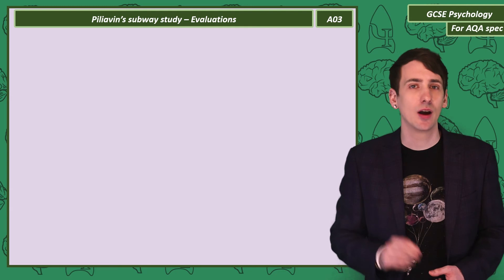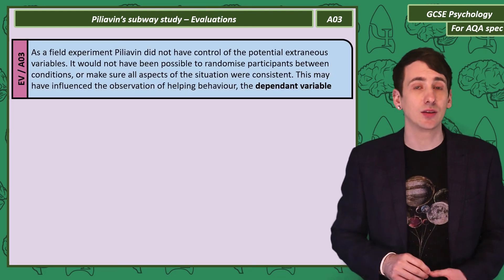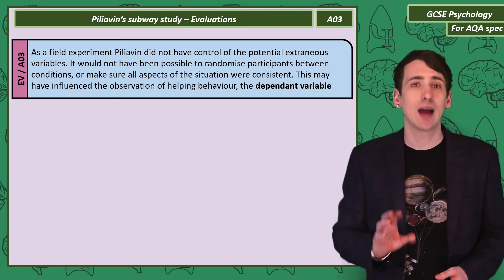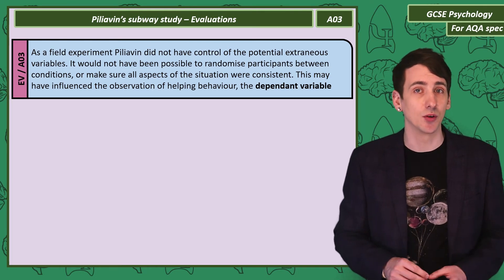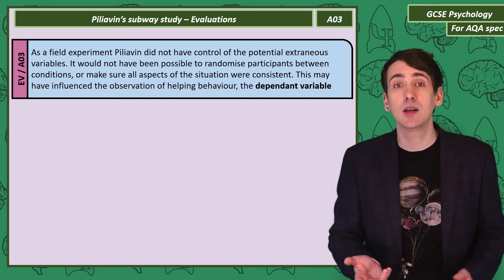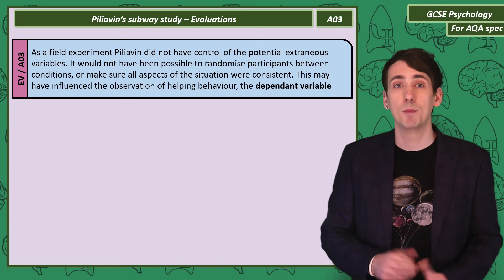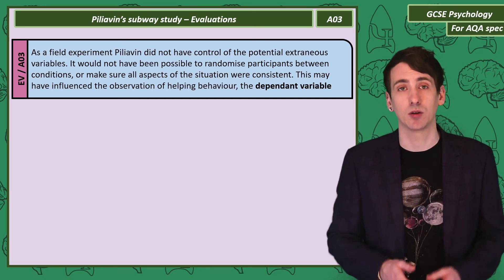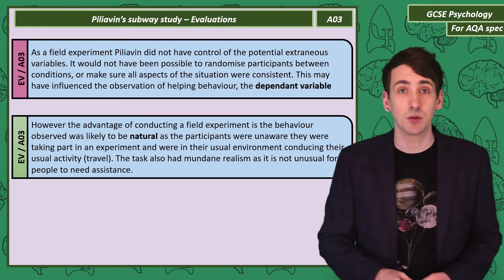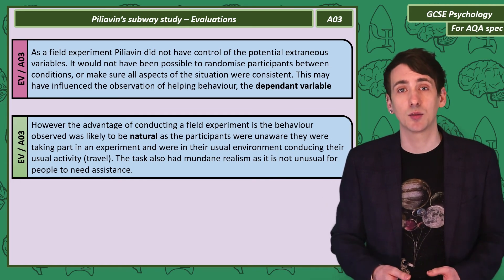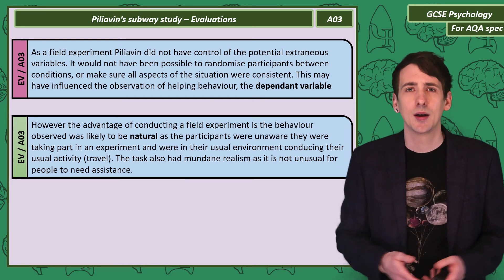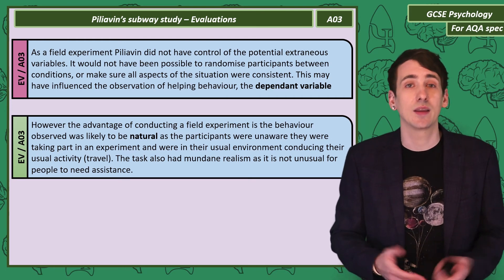When evaluating Piliavin's subway study, we can consider the advantages and disadvantages of using a field study method and how that influences the validity of the findings. As a field study, Piliavin didn't have control of potential extraneous variables — there could have been uncontrolled differences between the drunk and disabled conditions, such as individual differences between passengers. Maybe more helpful people happened to be on the subway in the disabled condition. However, the advantage of a field study is that the passengers' behaviour was very likely completely natural. Participants were unaware they were part of an experiment, in their normal environment, and while it's unusual for someone to collapse on the subway, it's believable — so the task has mundane realism.